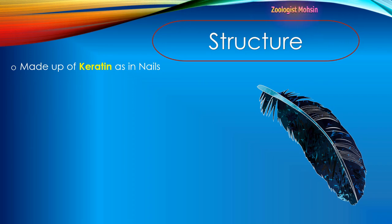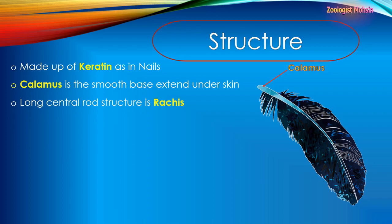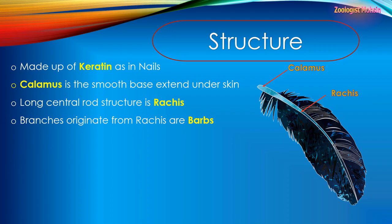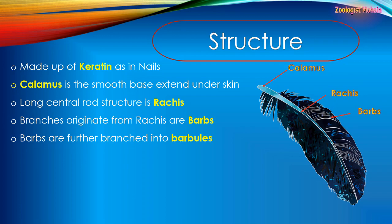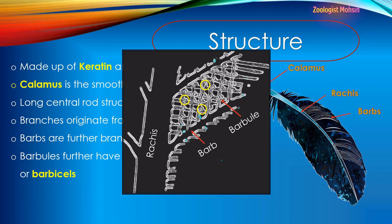Feathers are made up of keratin, as in nails or hairs in your body. The calamus is the smooth base that extends under the skin — here is the calamus, please remember this structure. The long central rod structure is the rachis — here is the long rod rachis. Branches that originate from the rachis are called barbs. These are the sub-branches of the rachis. Barbs are further branched into barbules.